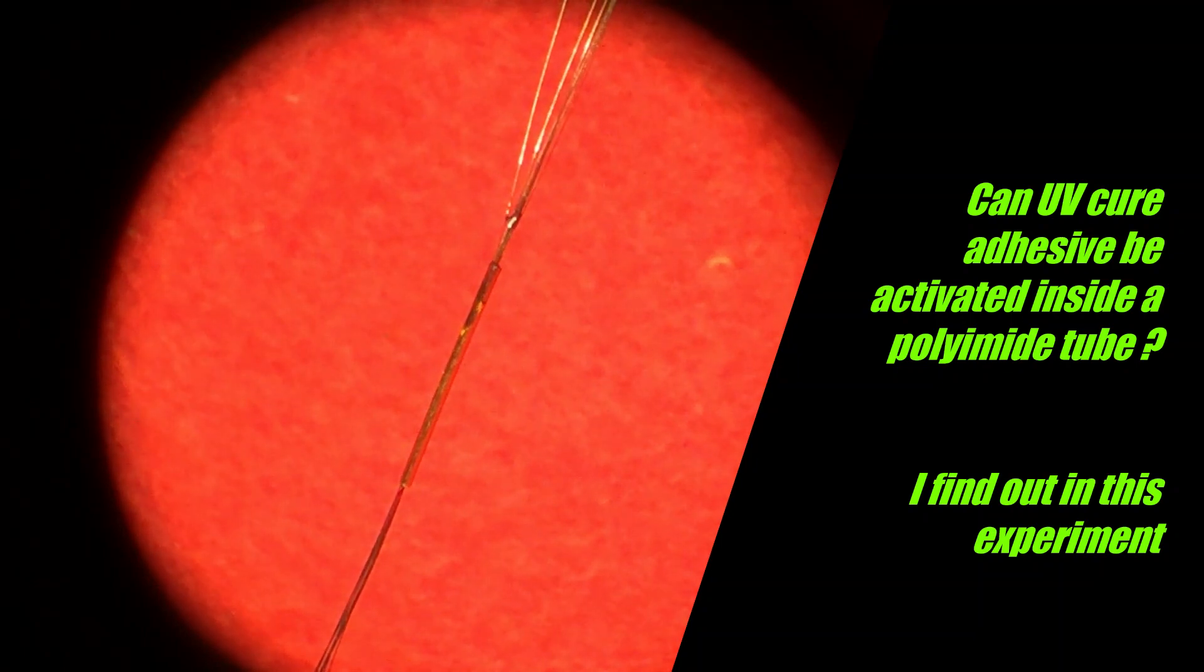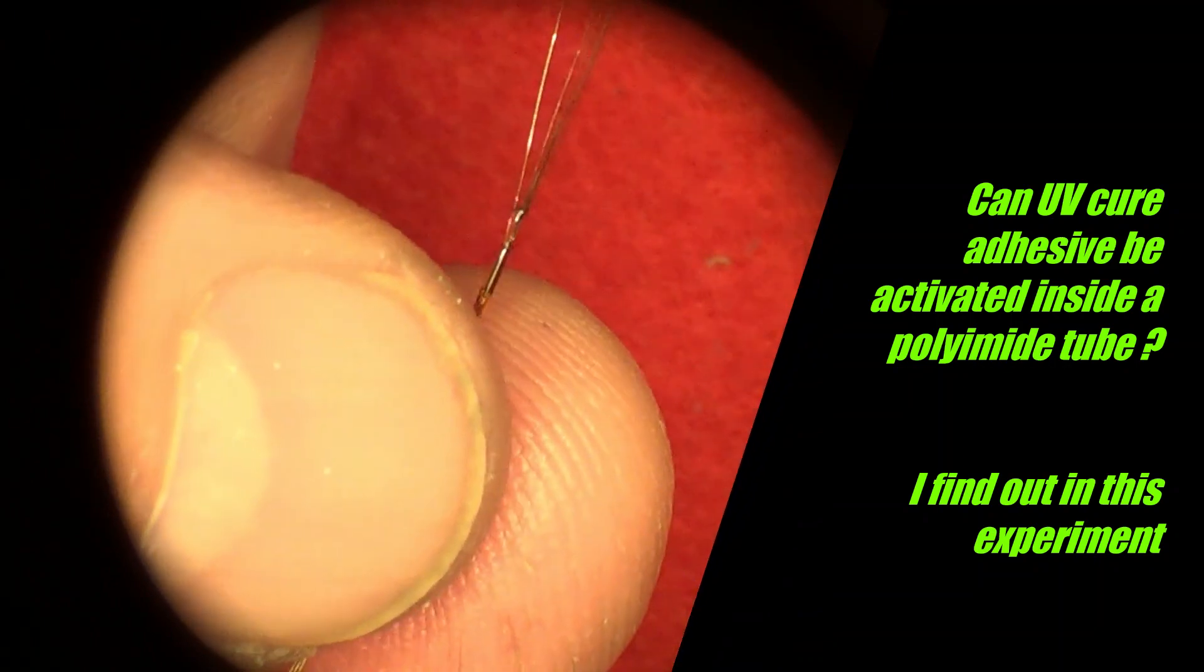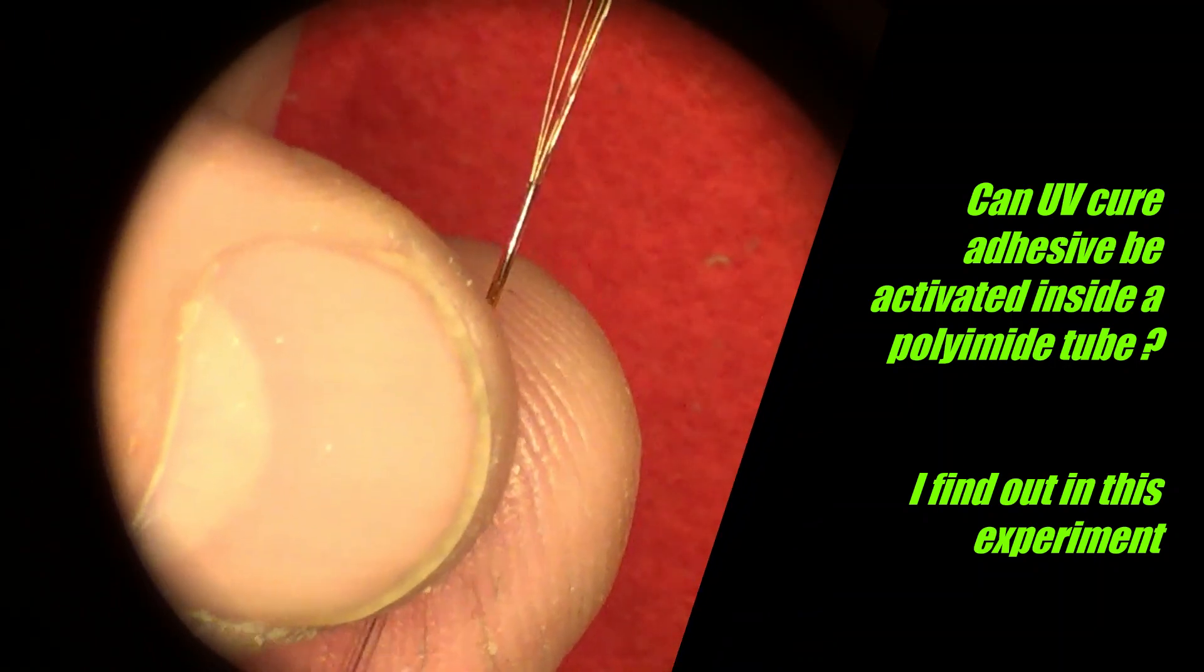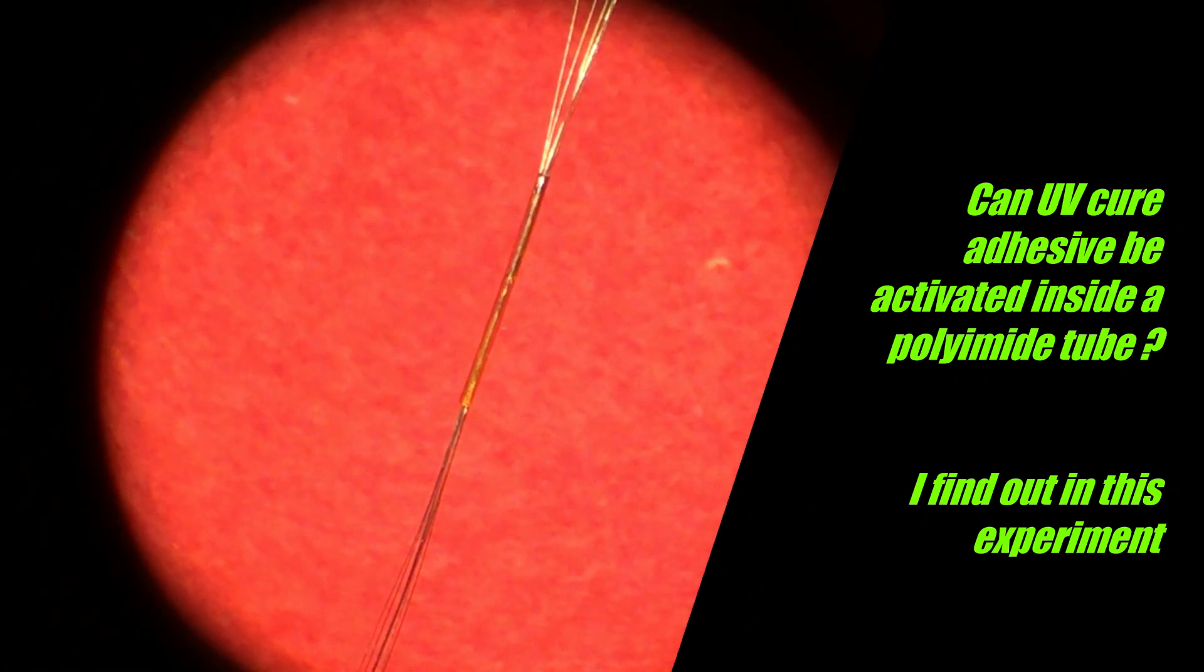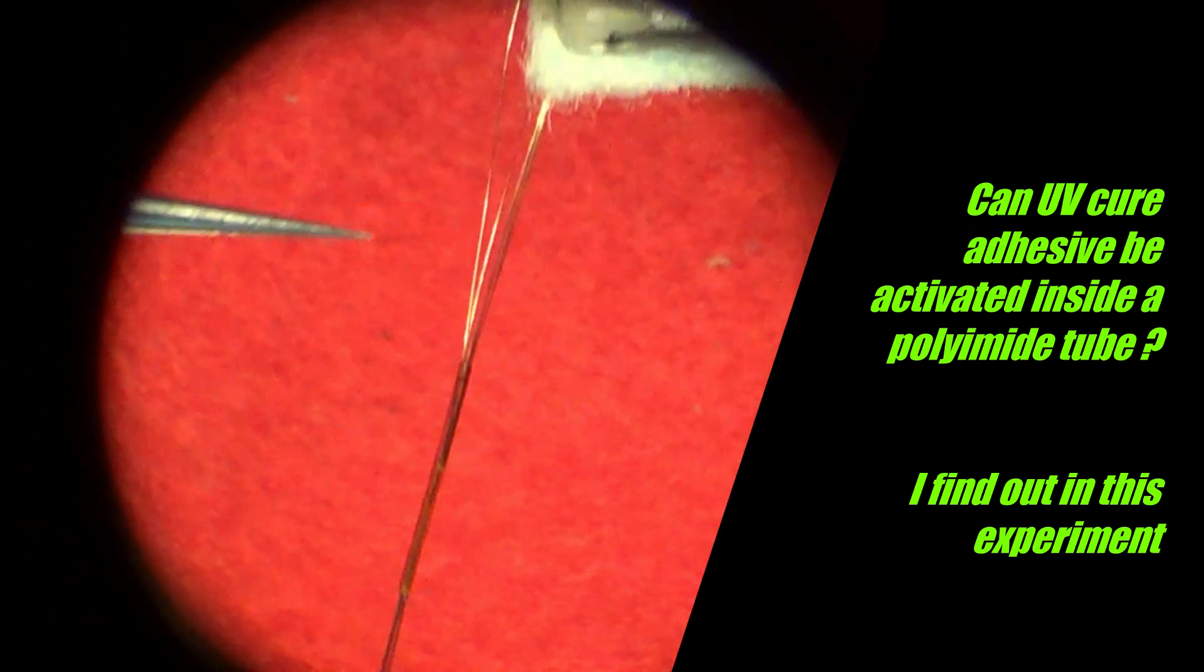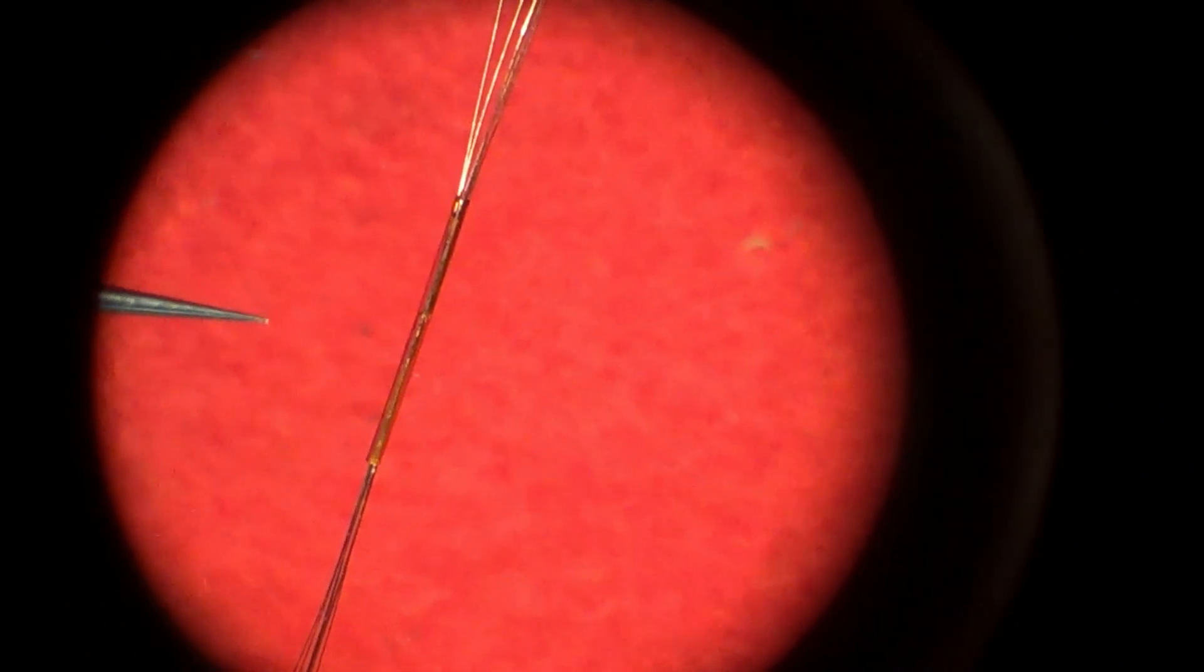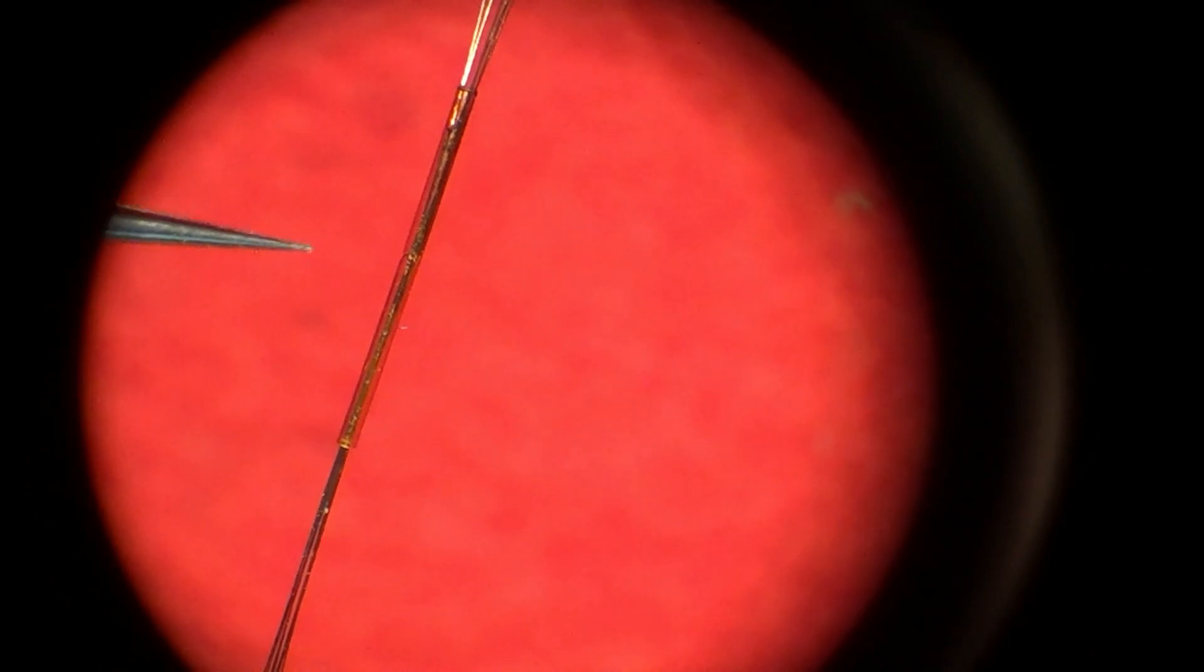I can see it wicking up inside there. So I can see it's wicked from here to there, and there's also a little there, but that's a good amount. That's enough to test with.